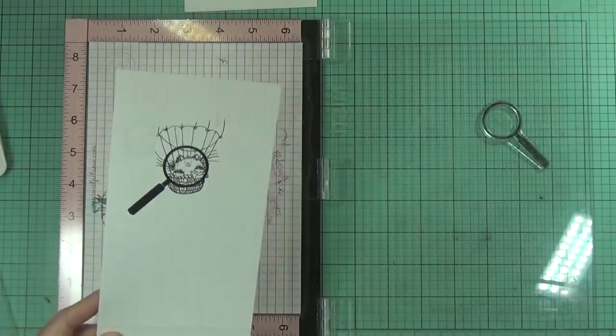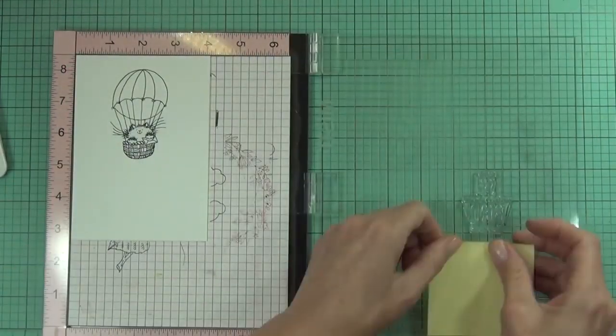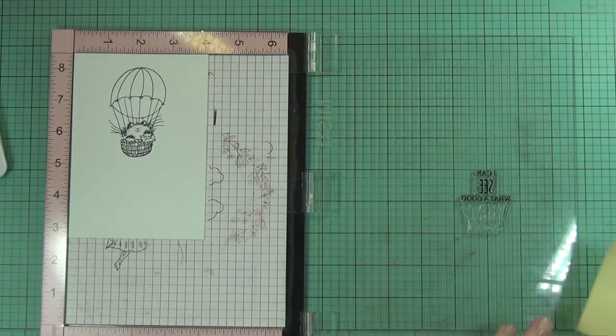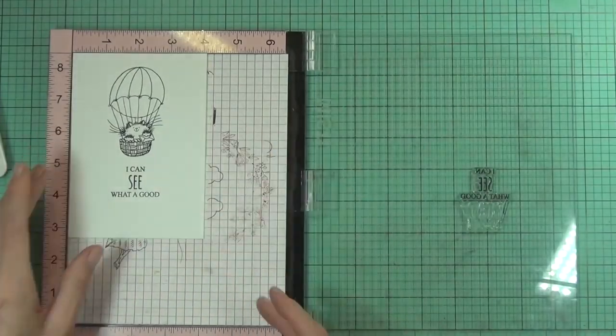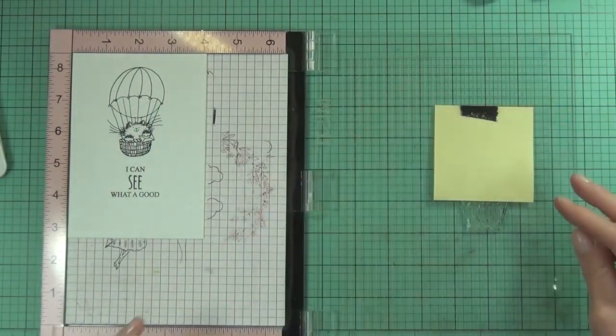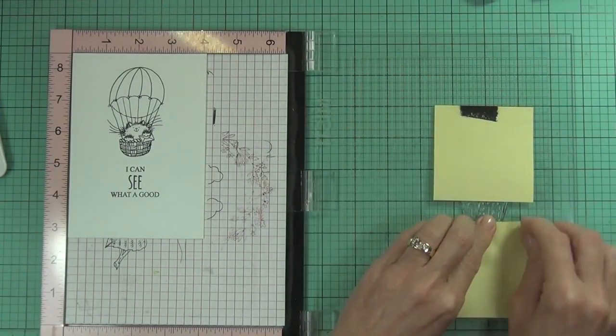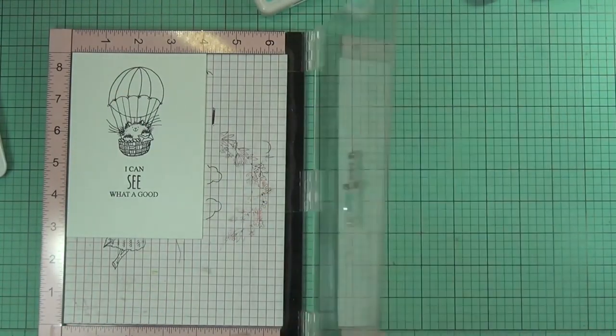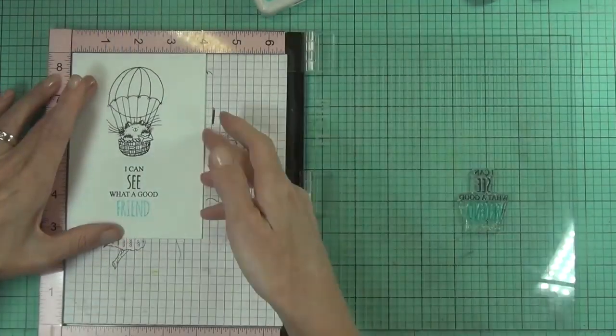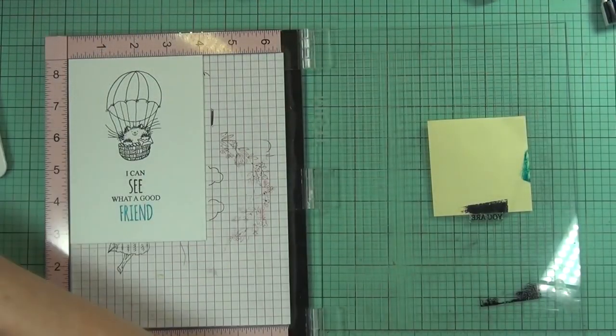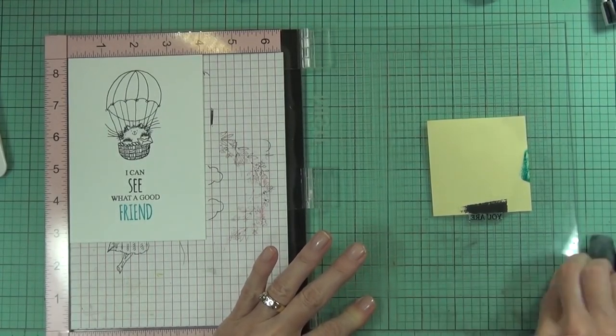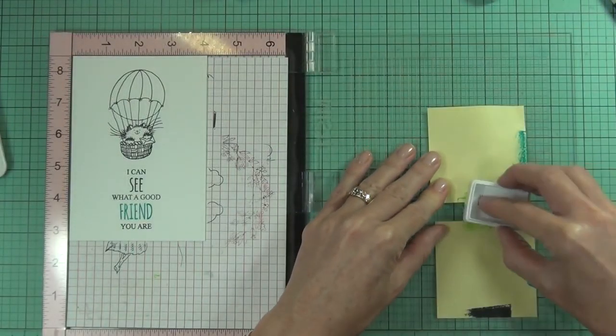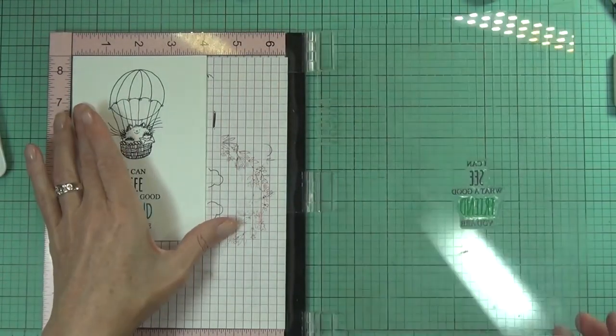Now I've stamped a magnifying image over top of that. My sentiment is from a set called Perspective, it's got some great sentiments in it. I wanted to do a two-tone effect for the sentiment so this is where the misty comes in really handy. Actually, I wasn't happy with the color I chose, but the misty did come in handy because I could come back and add another color over top and change the color that I stamped the sentiment in.